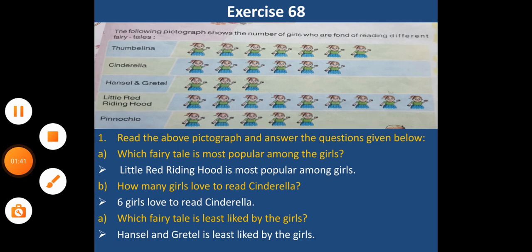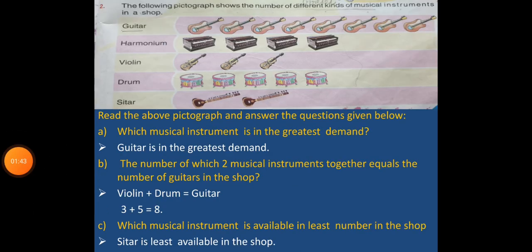Question number 2, the following pictograph shows the number of different kinds of musical instruments in a shop. Name of musical instruments are guitar, harmonium, violin, drum and sitar. Read the above pictograph and answer the following questions.